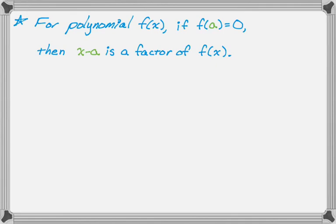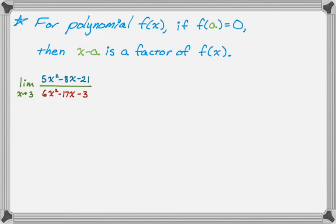So let me demonstrate what that means. Say we have this limit: the limit as x approaches 3 of 5x squared minus 8x minus 21, all over 6x squared minus 17x minus 3. If you substitute 3 in, you get 0 over 0 if you try to evaluate this directly. Since the numerator and denominator are polynomials, I know that x minus 3 must be a factor of both. So I'm going to use that to factor.